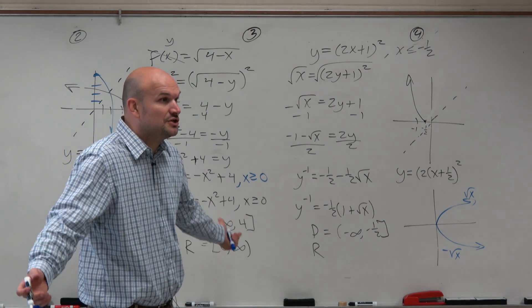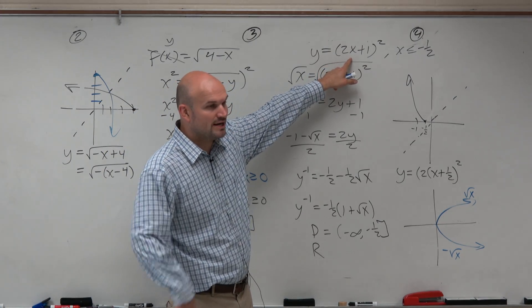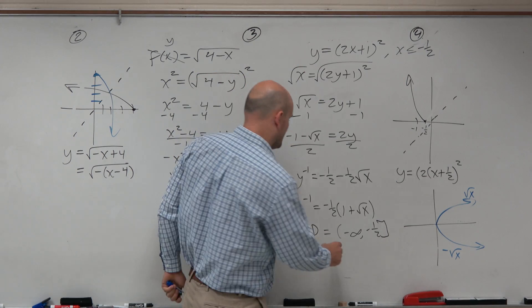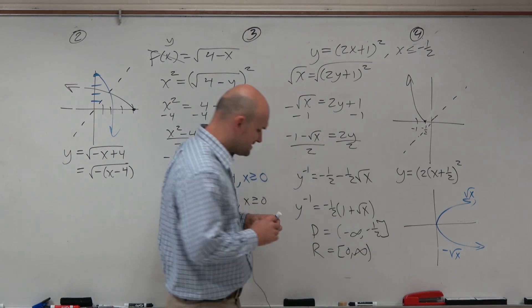And then the range, I'm just going to go off the basis of knowing what the graph looks like. The range, nothing is going up or down, right? Everything's left or right, so therefore, the range, I already know, is going to be from 0 to infinity.